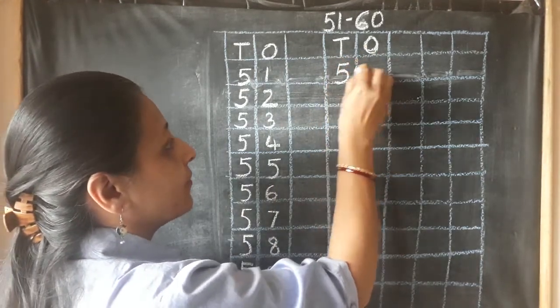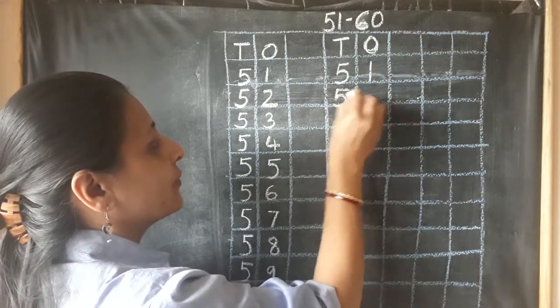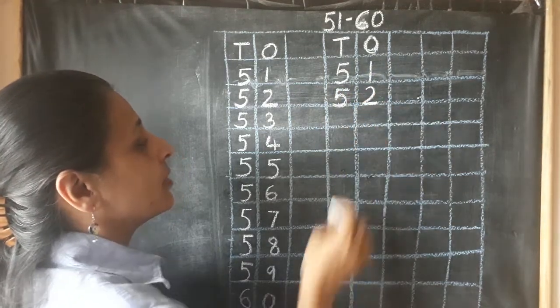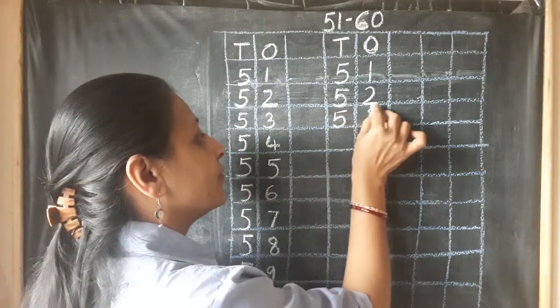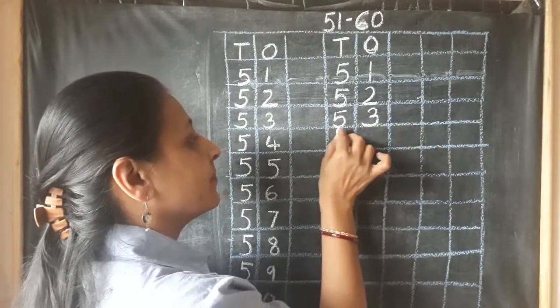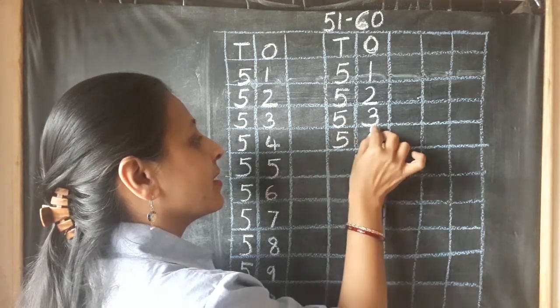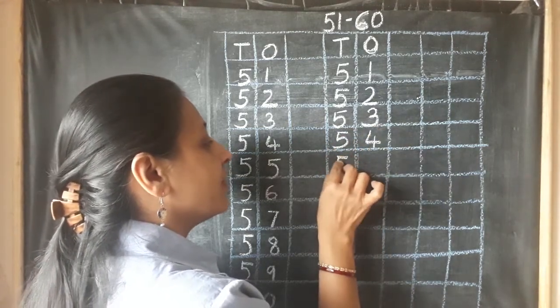Second demonstration: 5, 1, 51. 5, 2, 52. What comes after 52? 5, 3, 53. 5, 4, 54.